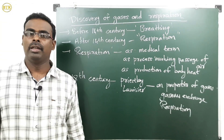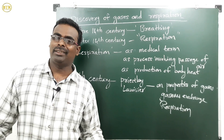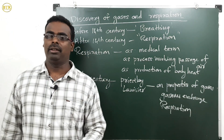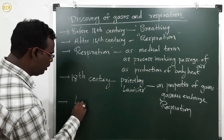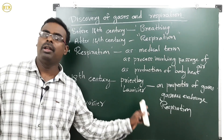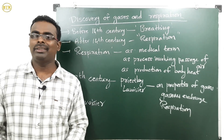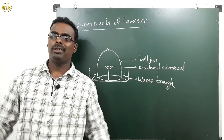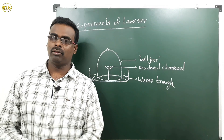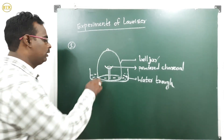After that, Lavoisier carried out several experiments on properties of gases. In the first experiment, he took a bell jar and kept it inside a water trough, placing powdered charcoal inside the bell jar.